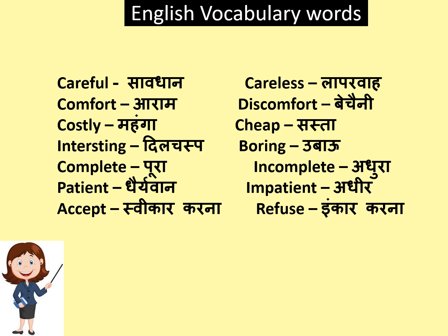Mehenga — Costly. Sasta — Cheap. Dilchesp — Interesting. Ubao — Boring.